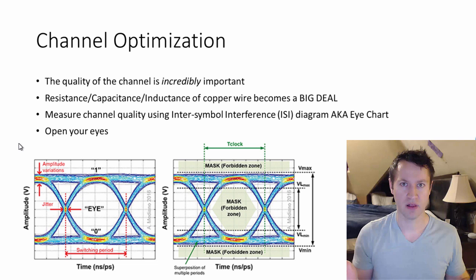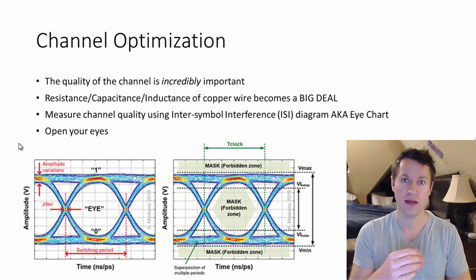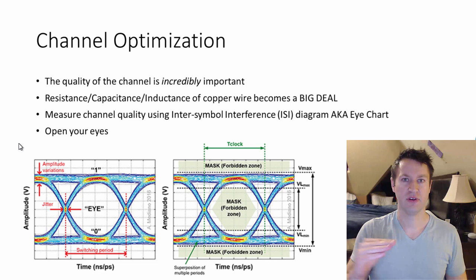That's really the time it takes to charge your wires up. The faster you need to go, the more that this becomes a big deal. One quality measurement that is used is something called an inter-symbol interference diagram or an eye chart. It's called an eye chart because it literally looks like an eye if you look at the picture.